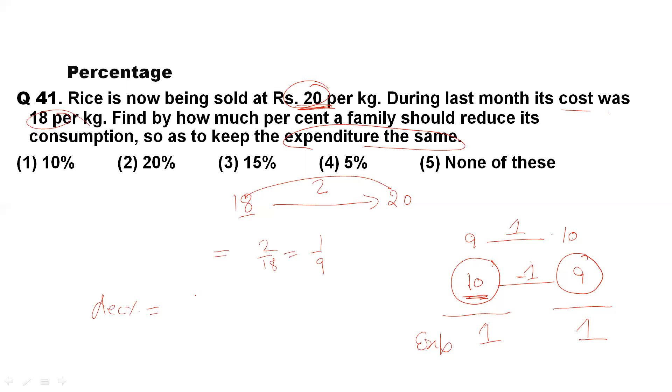That means decrement in percentage will be equal to 1 decrease on 10 rupees, multiply by 100, and it comes out to be 10% decrement. So the family has to reduce its consumption by 10% so that the total expenditure will not change or it will be the same at the end.